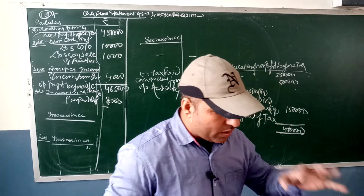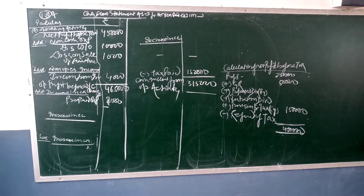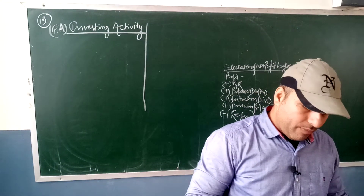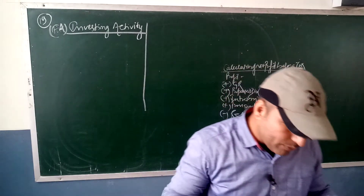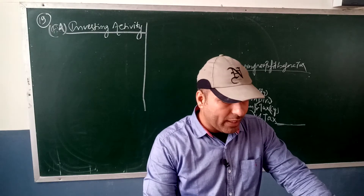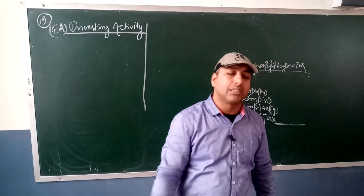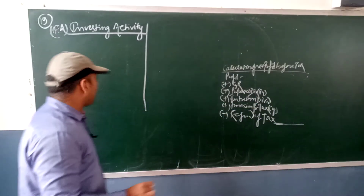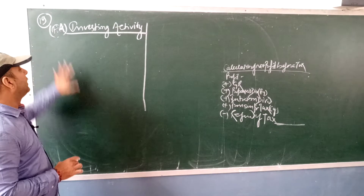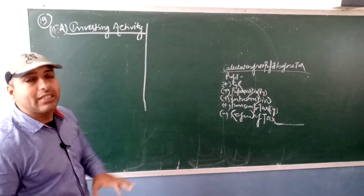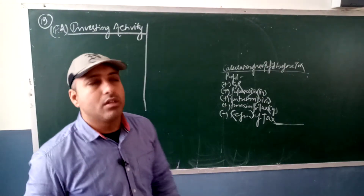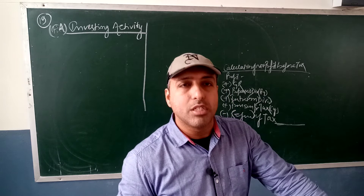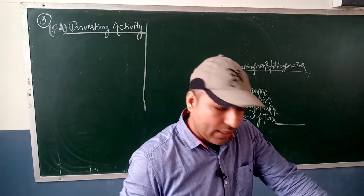Question 19 is investing activity for class 12. Homework question 18b follows the same pattern. Writing off preliminary expenses — if cash expenses, they go to plus in cash flow from investing activity. Fixed assets: whatever is purchased or sold goes to investing activity. Purchase of fixed assets goes to minus, and when you receive money from sale it goes to plus. Rent or commission received also goes to investing activity.